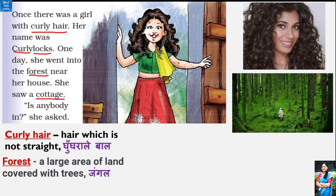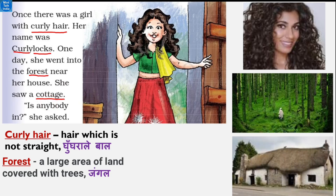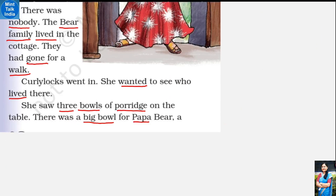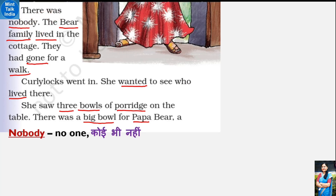Forest ek aisi jagah hoti hai jahaan pe duur duur tak bahut saare ped nazar aate hain. Wahaan pe usne aur kya dekha? She saw a cottage - usne ek chhota sa cottage bhi dekha. Cottage matlab ek chhota sa ghar, kutia. Usne puchha - is anybody in? Kya is ghar ke andar koi rehta hai? There was nobody - wahaan pe koi bhi nahi tha. Nobody matlab koi bhi nahi.